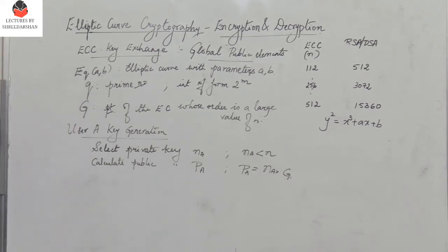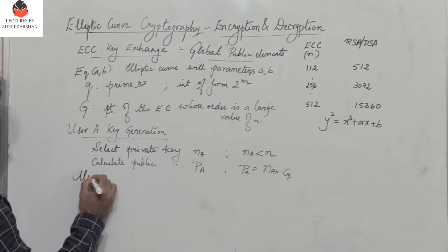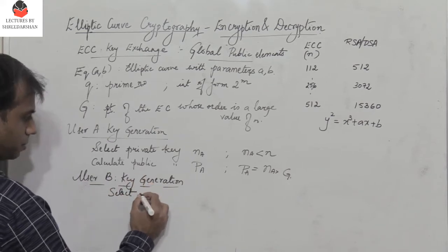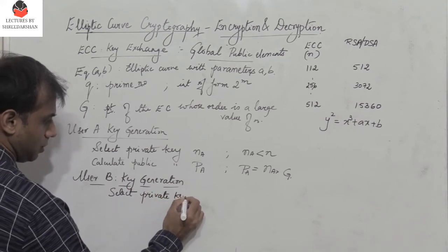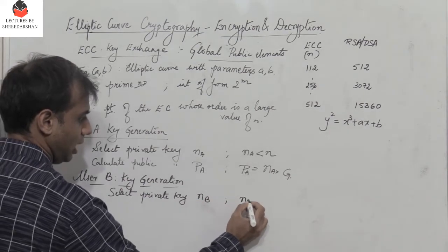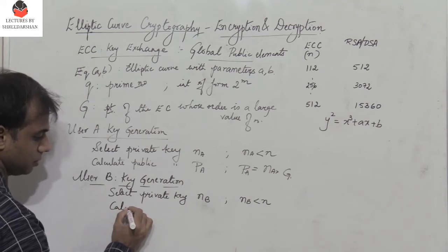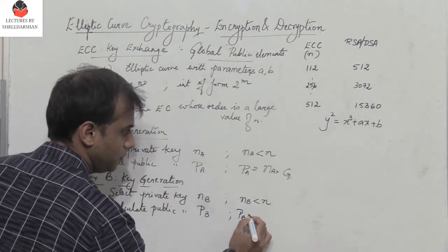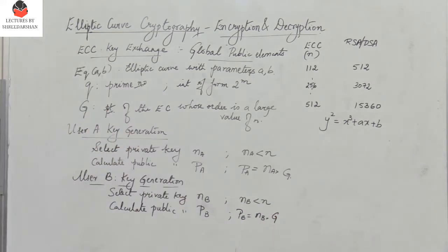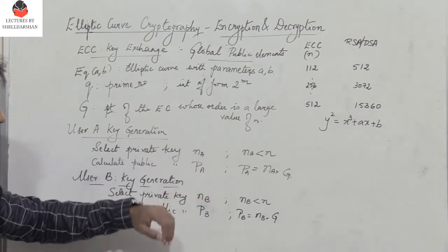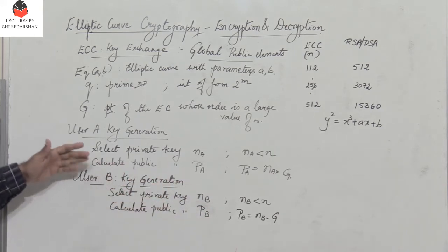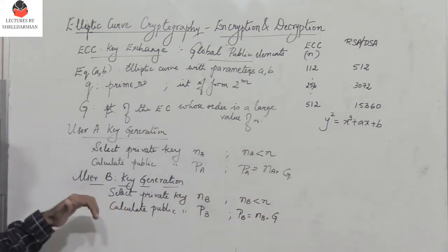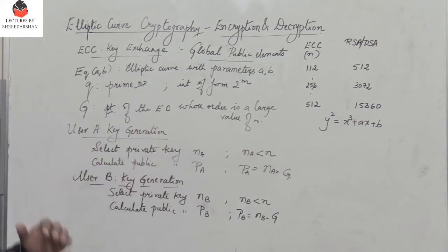Similarly, user B key generation follows the same process. User B selects a private key N_B where N_B < n, and calculates the public key P_B = N_B · G. User A keeps his private key to himself and shares his public key P_A with B, while user B keeps his private key and shares P_B with user A.